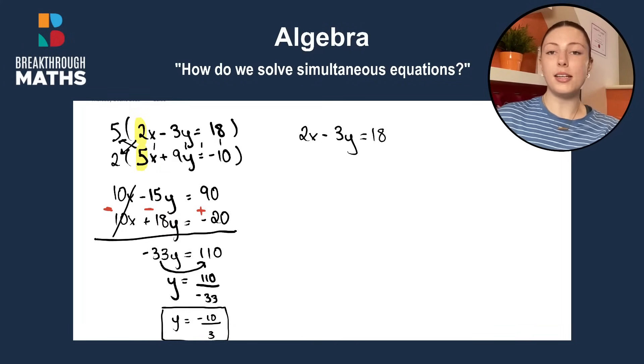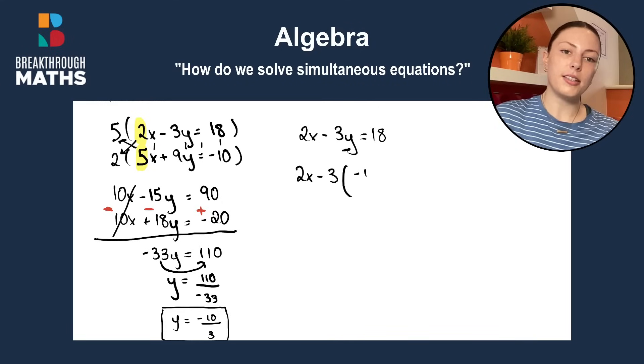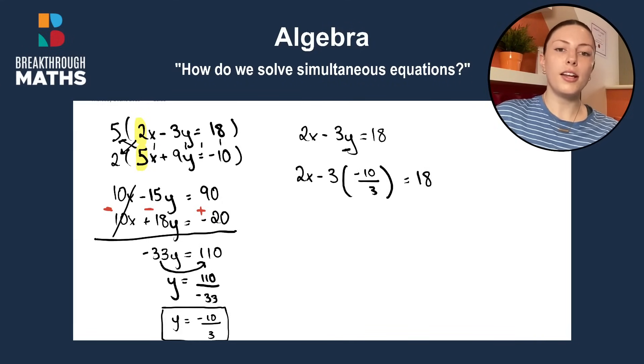So, we sub in y is equal to minus 10 over 3 into our equation here for y. So, we'd be left with 2x minus 3 times minus 10 over 3 is equal to 18. So, all that changed here was the value for y changed to what we found it was over here.